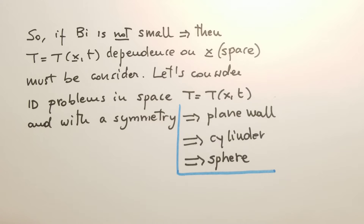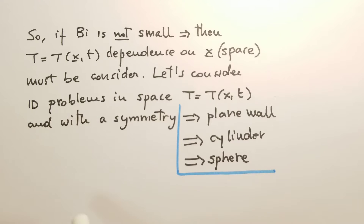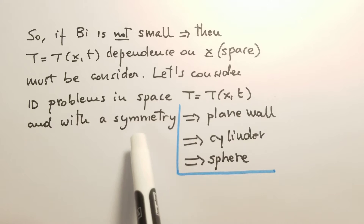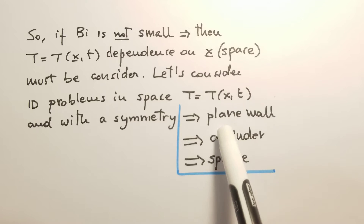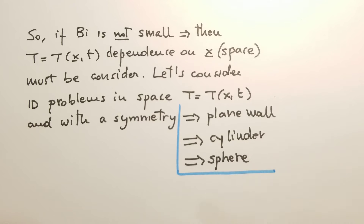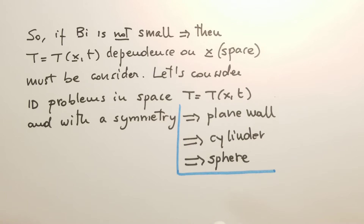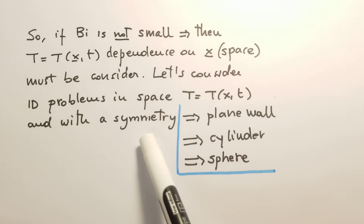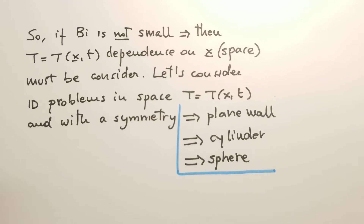We focus on problems that are 1D in space and depending on time, but they also have a symmetry. We consider the case of a plane wall, a cylinder, or a sphere. The symmetry is both geometrical symmetry and also thermal symmetry.